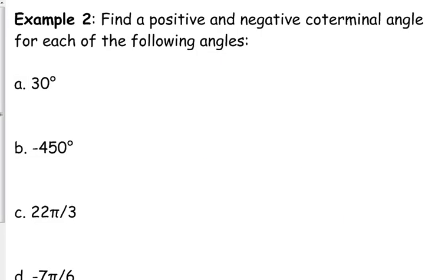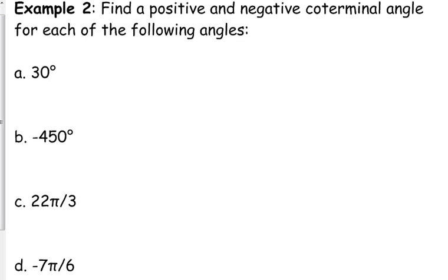We have one more set of examples: finding a positive and a negative co-terminal angle for each of the following. The first one is 30 degrees. Positive means we add 360, giving us 390. If we subtract 360, that gives us negative 330.